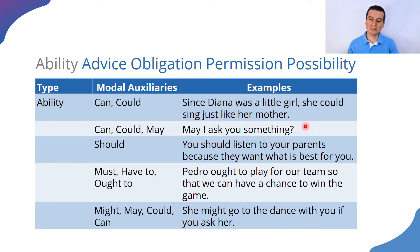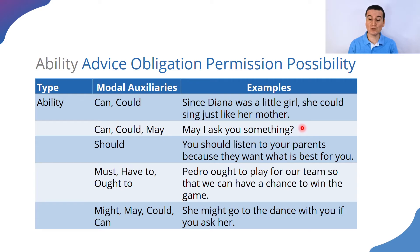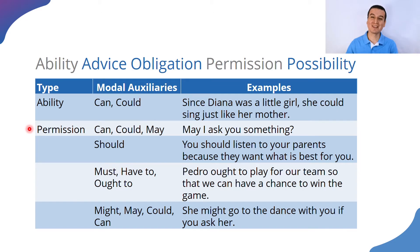Next, the sentence says: 'May I ask you something?' It's a request. You could also say 'Could I ask you something?' or 'Can I ask you something?' because those modal auxiliaries serve the same purpose. What is that purpose? Permission — very good, that is the answer.